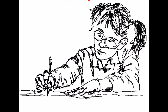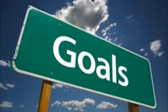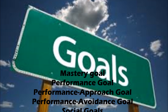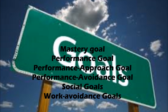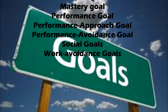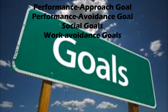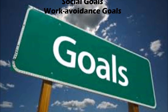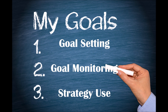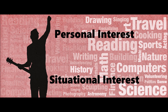Goals can help overcome learned helplessness. We're going to focus on mastery goals — mastering a skill or task; performance goals — wanting to be the best in the class; performance avoidance goals — trying to avoid uncomfortable situations like public speaking; social goals — trying to have people see them in a good light; and work avoidance goals — completing an assignment with as little effort as possible. These goals feed into goal theory, and then into goal setting, goal monitoring, and strategy use in order to complete those goals.